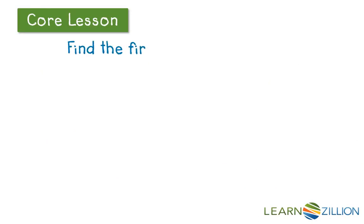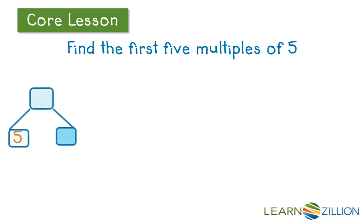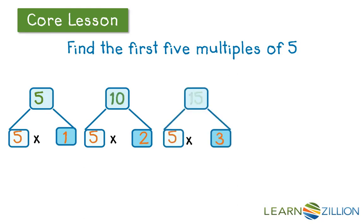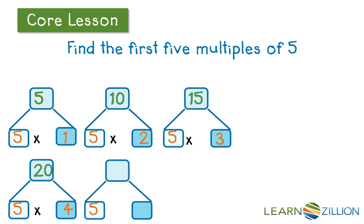Let's go back to that question that was in the beginning of the lesson. Find the first five multiples of 5. Let's apply what we know. We start with a number bond. 5 and we put the other factor of 1. 5 times 1 is 5. 5 times 2 is 10. 5 times 3 is 15. 5 times 4 is 20. 5 times 5 is 25.